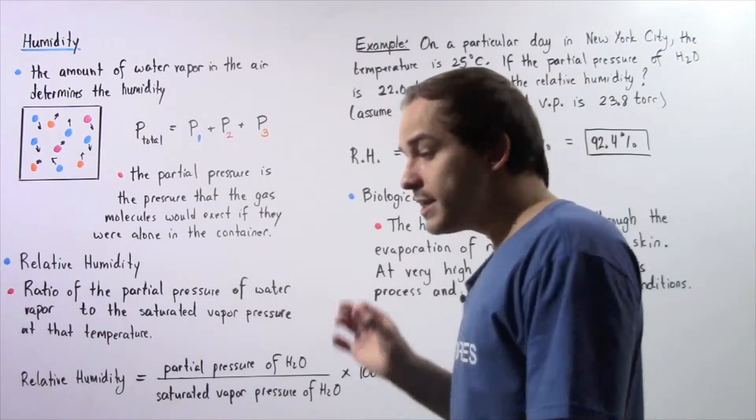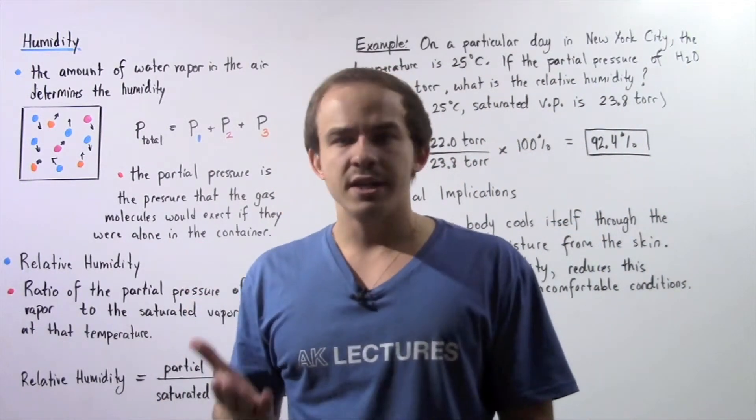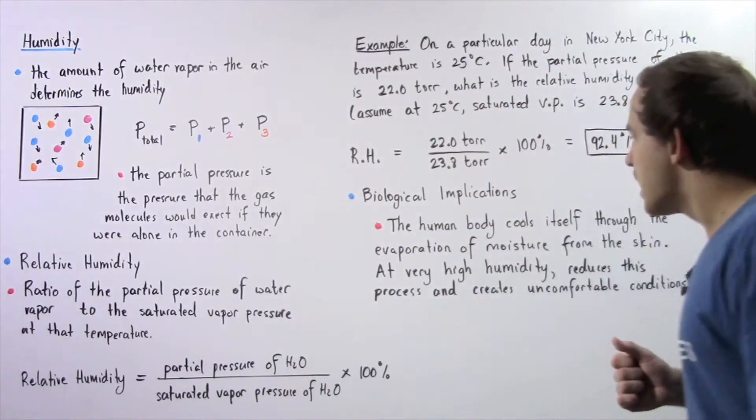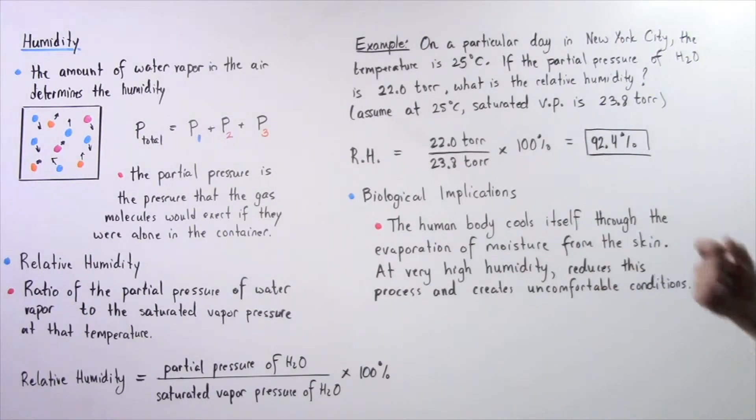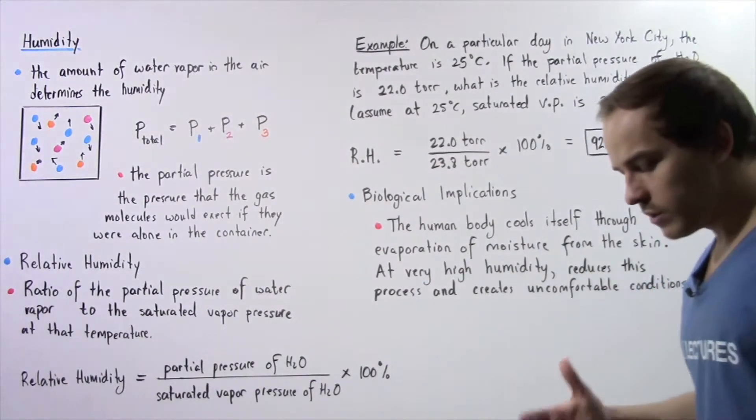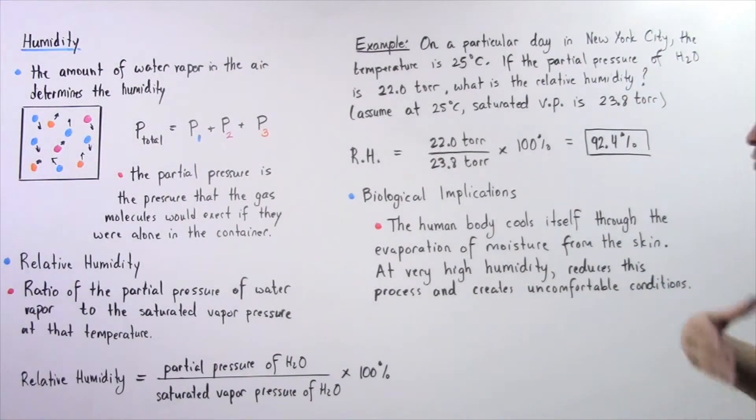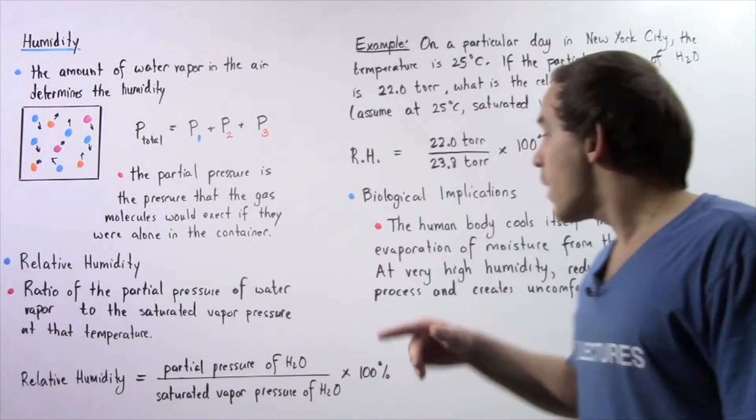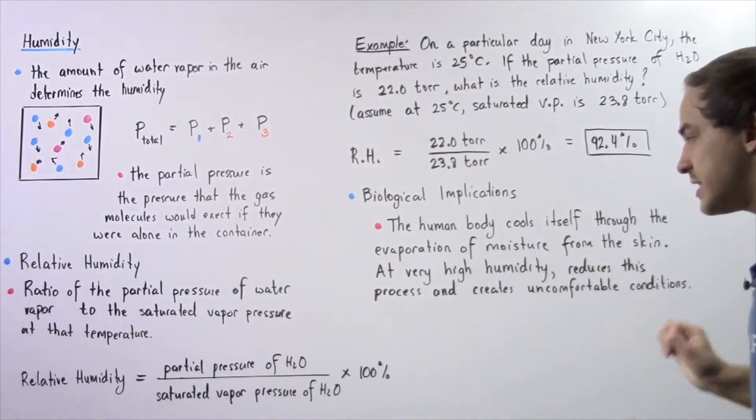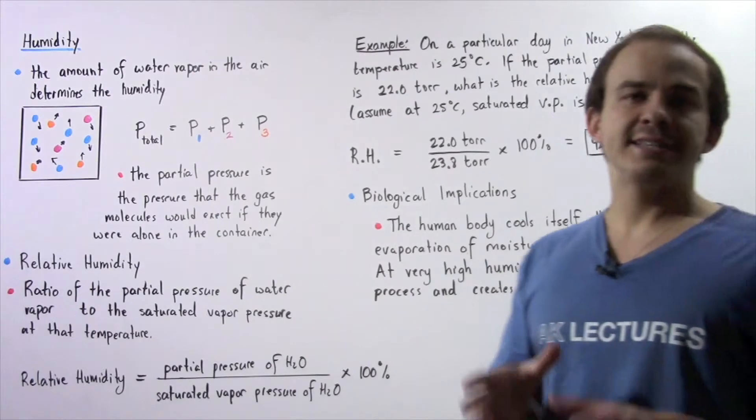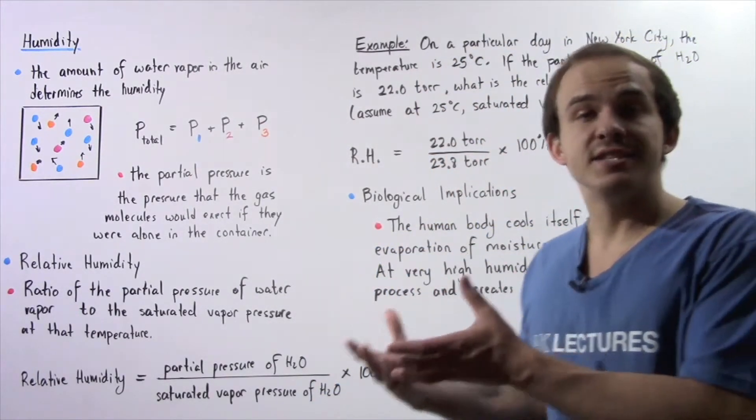Let's explore one important biological implication of humidity and vapor pressure. The human body cools itself through the process known as evaporation. It evaporates the moisture found on the skin and that cools our bodies. At very high humidity, this reduces the process and creates very uncomfortable conditions.